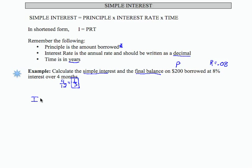Let's see how we would compute the simple interest. We take I equals P times R times T, and our principal is $200 times .08, that's our interest rate, times one third.